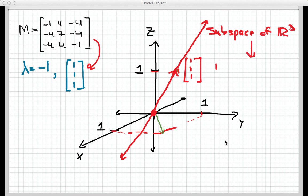We're going to call this the eigenspace for that eigenvalue, lambda equals negative 1.